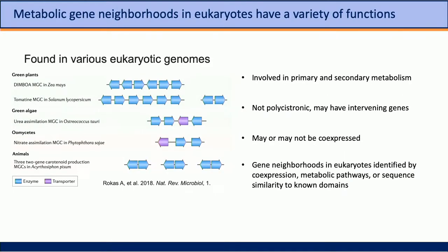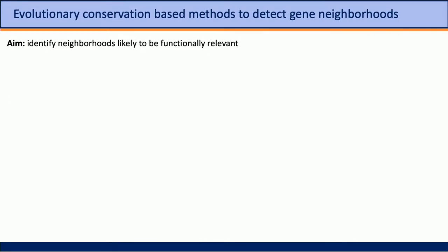Can this strategy be applied to eukaryotic genomes? In recent years there have been increased reports of gene neighborhoods in eukaryotic genomes involved in primary or secondary metabolism. Unlike bacterial operons, they're not polycistronic, may have intervening genes, and may or may not be co-expressed. Current methods to detect gene neighborhoods in eukaryotes often require transcriptome data or sequence similarity-based approaches, which may not be applicable to non-model organisms like algae. So instead I've returned to ideas from early prokaryotic work — searching for proximal orthologous genes that form conserved gene neighborhoods.